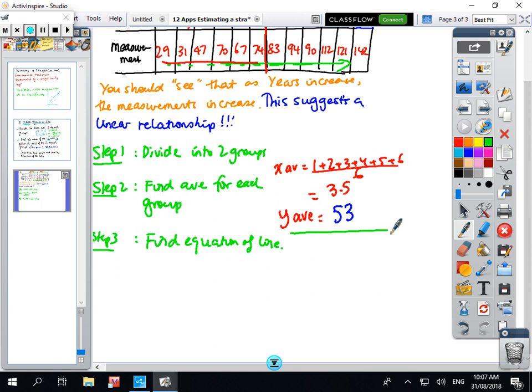Okay now we're going to look at the second group. So again the x numbers, I'll do the x numbers for you, so the x average was 7 plus 8 plus 9 plus 10 plus 11 plus 12 over 6, so that average is 9.5.